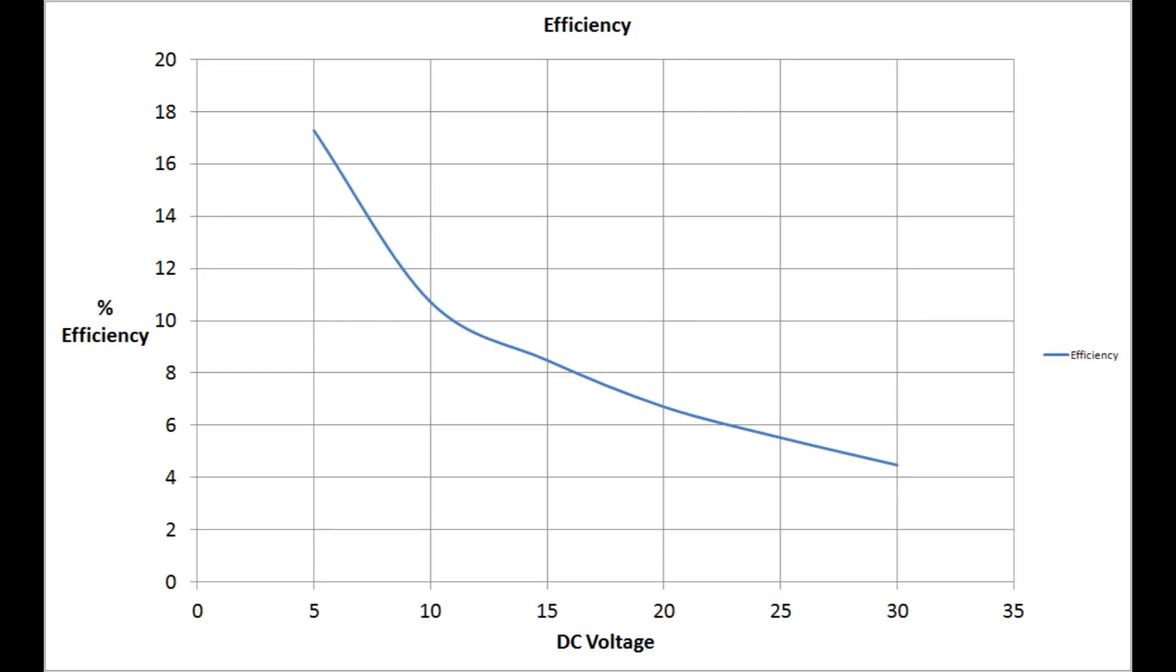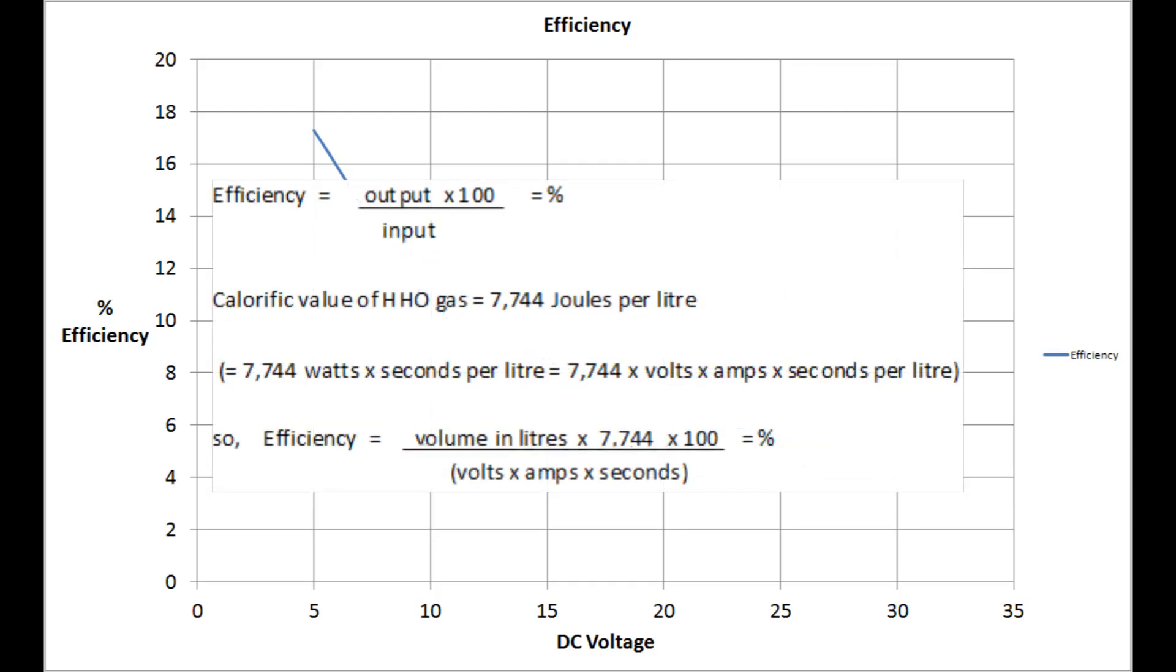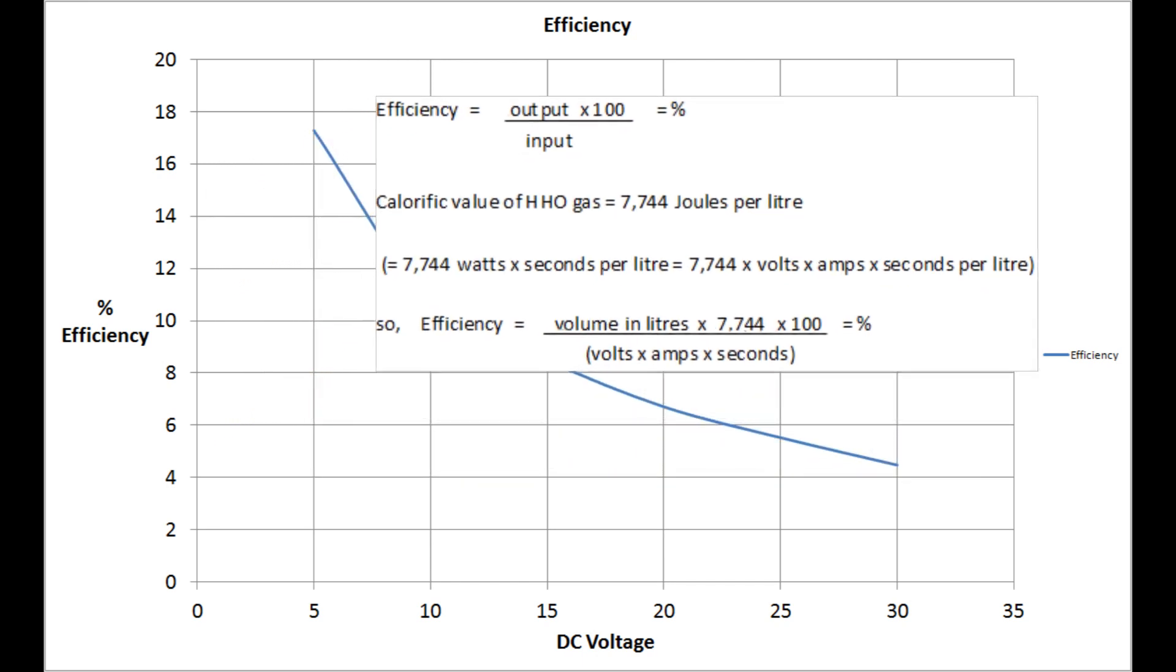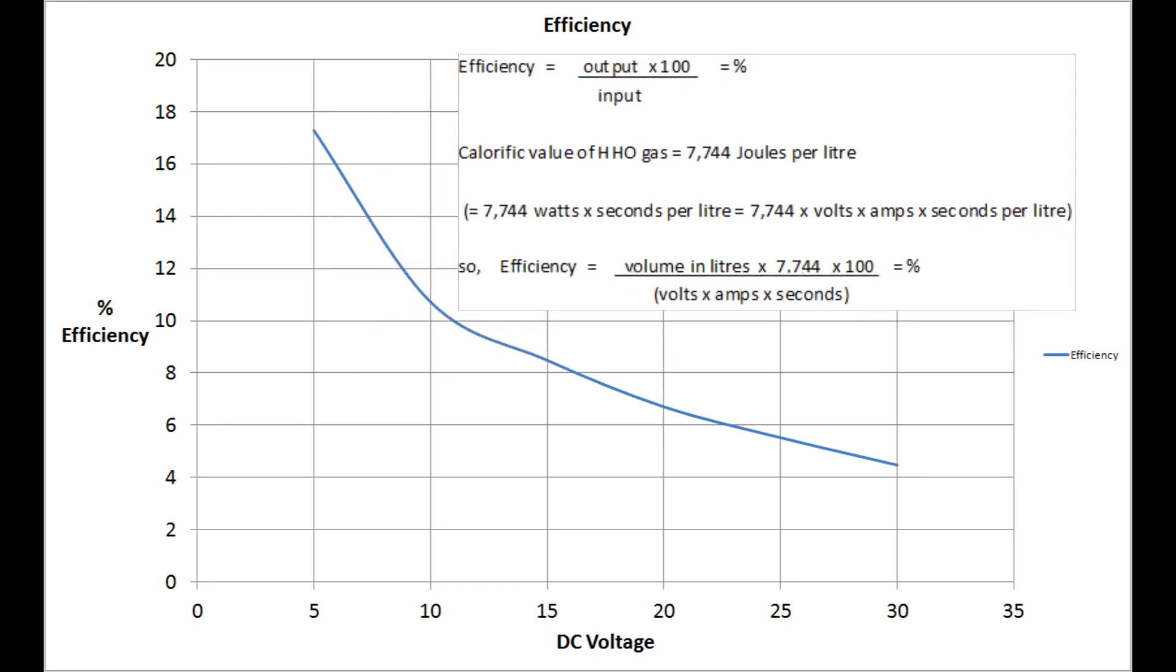To calculate the efficiency I've taken the output and divided that by the input and multiplied it by 100. I've taken the calorific value of the HHO gas as 7744 joules per litre or watts seconds. And for this test I've measured the amps and volts into the cell so I'm not taking into account any losses in the power supply unit.